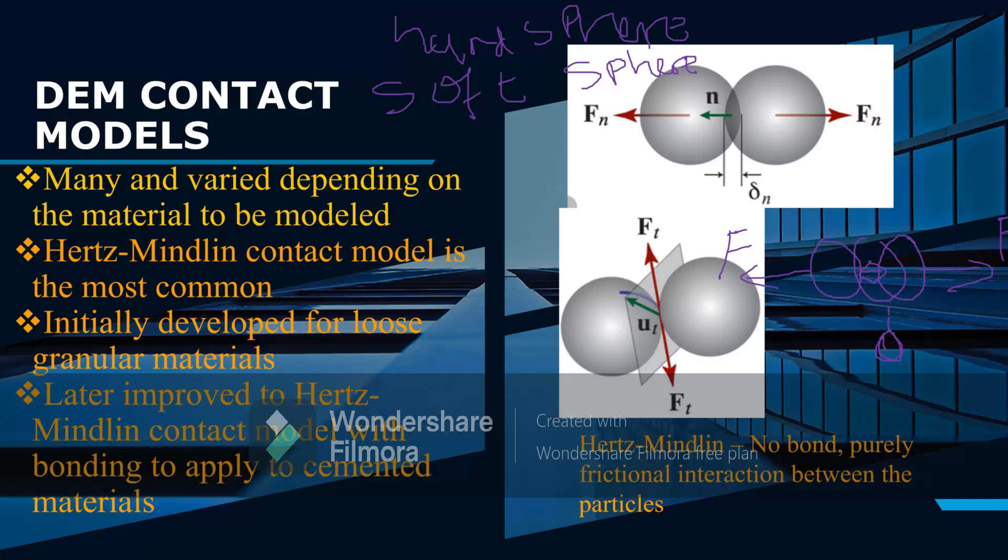The original Hertz-Mindlin model did not take care of bonds or assume existence of a bond. This was just for loose granular material.